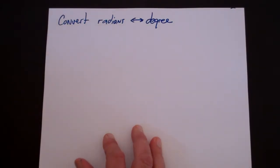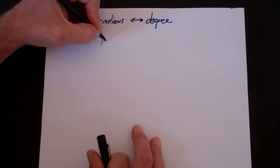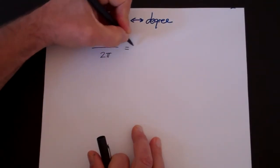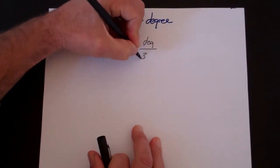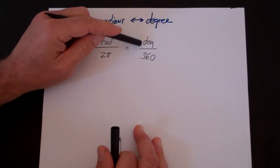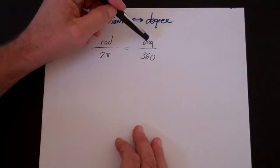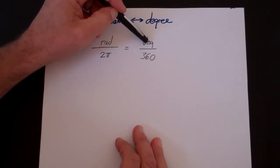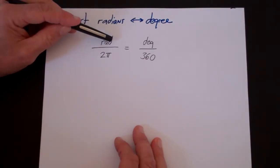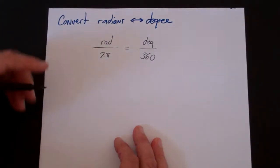Here is the formula we're going to use. Since radians divides a circle into 2 pi, and degrees divides it into 360, this ratio must hold: radians over 2 pi equals degrees over 360. That's easy to remember because degrees divides a circle into 360 parts, and radians essentially divides the circle into 2 pi parts.